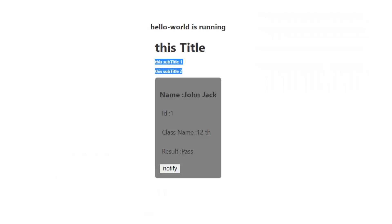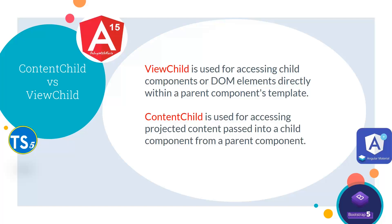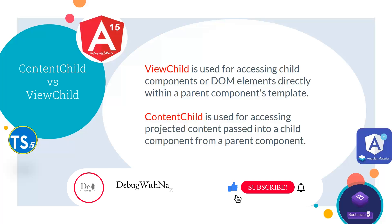This is the way we can pass dynamic data from a parent component to the child component by ContentChild. If we compare both ContentChild and ViewChild: ViewChild is used for accessing child components or DOM elements directly within a parent component's template, while ContentChild is used for accessing projected content passed into a child component from the parent component.